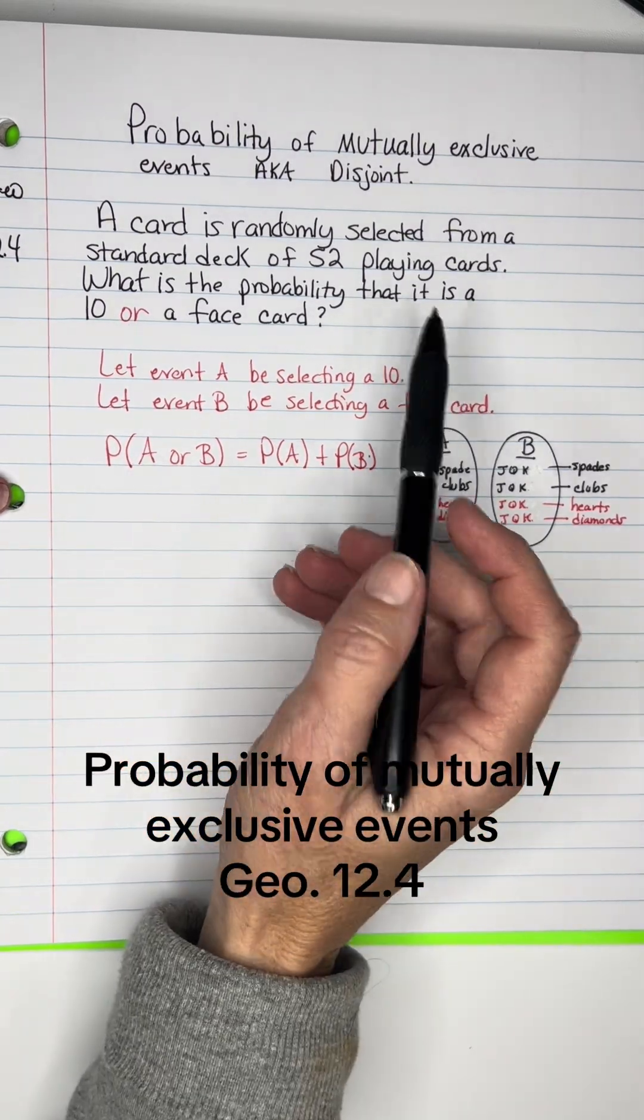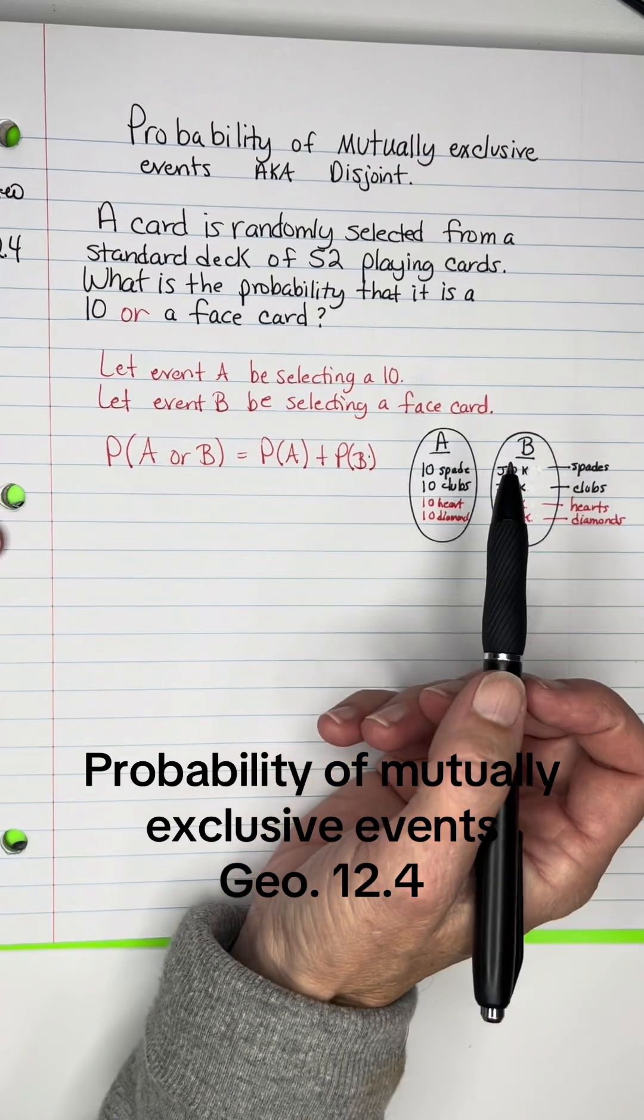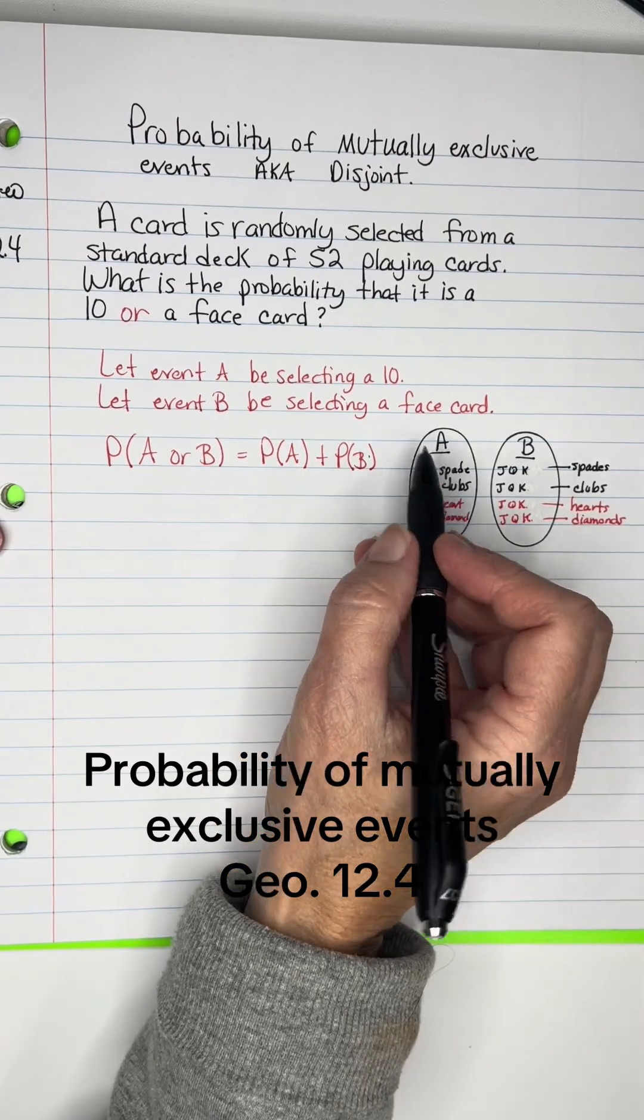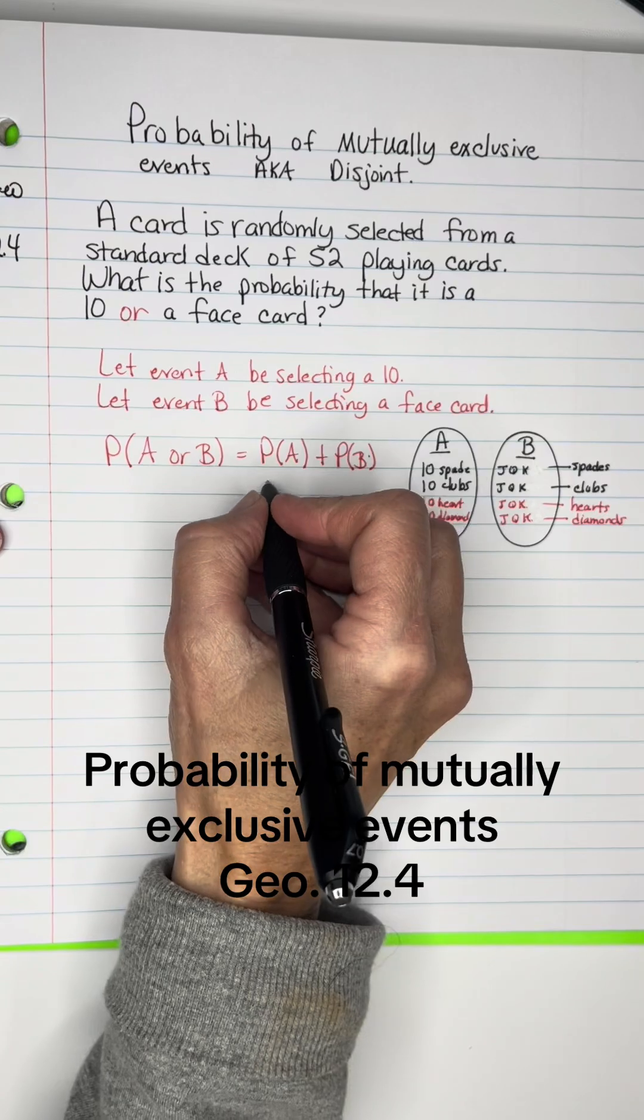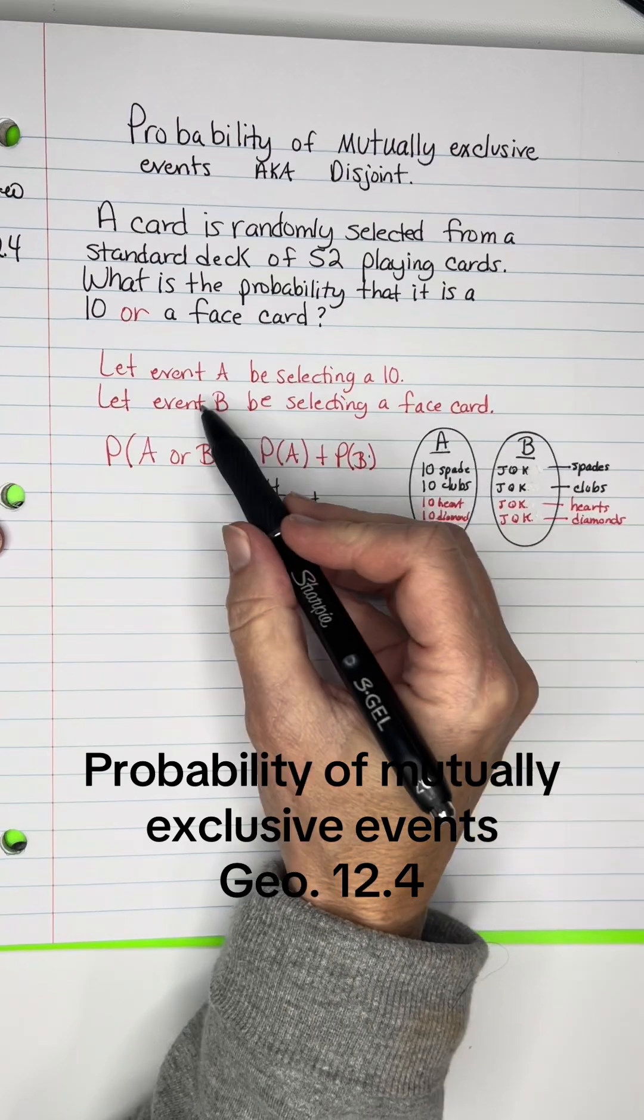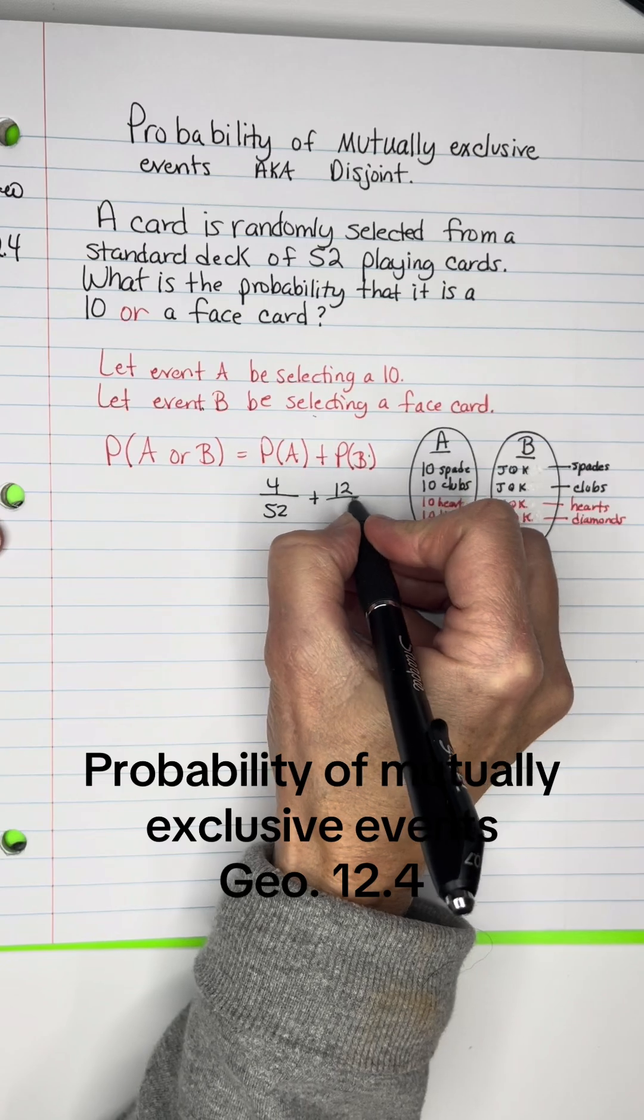All right, so when it is a mutually exclusive event, that means that there's no outcomes in common. Then you're just going to add the two probabilities. So the probability of finding a 10 is 4 out of 52. That will be added to the probability of getting a face card, which is 12 out of 52.